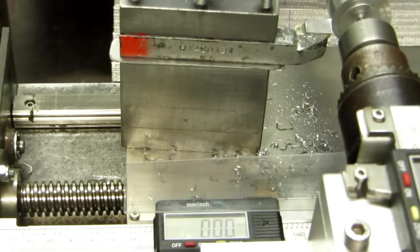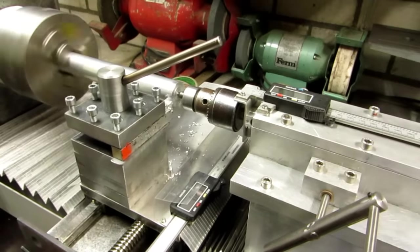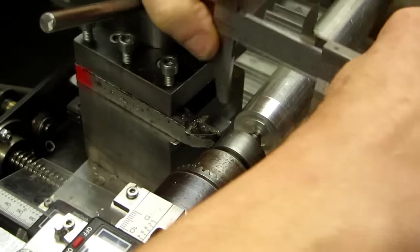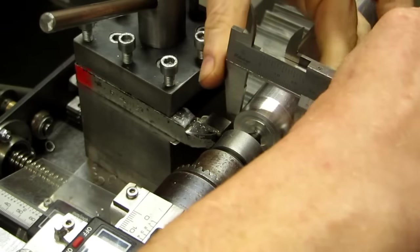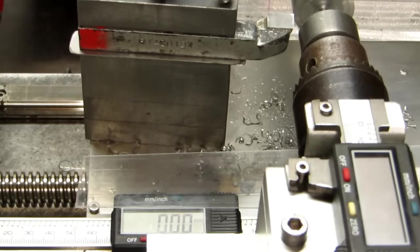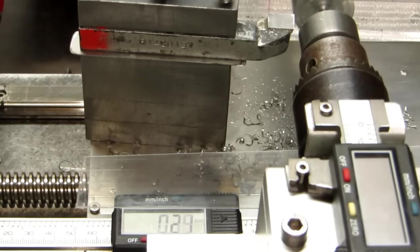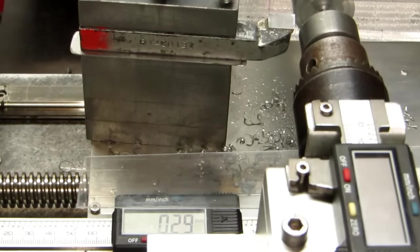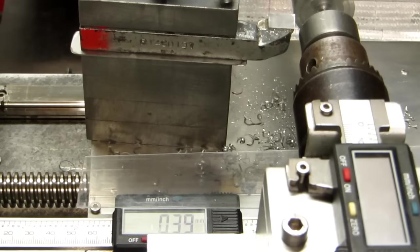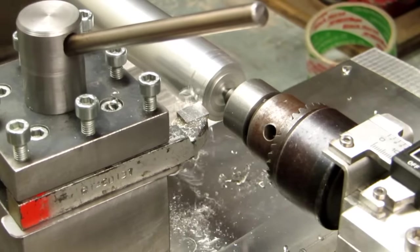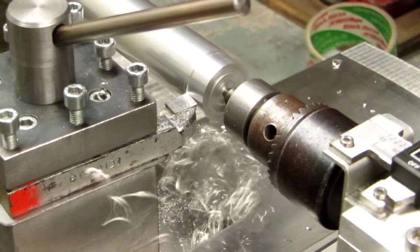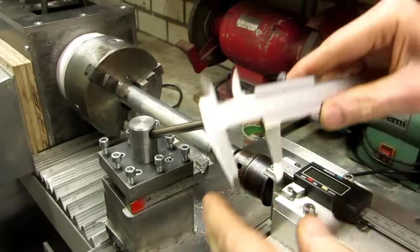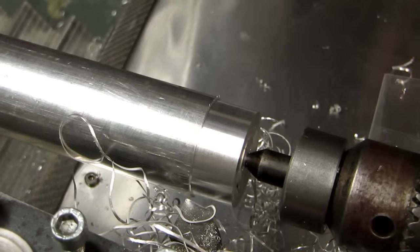First I zero the cross-slide caliper and make a rough cut. Then I measure the rough cut diameter. To get a defined end cut diameter I set the new cross-slide cut depth to 50% of the difference between the rough cut and the end cut diameter. The resulting end diameter is now exactly the target value. The surface finish is also quite nice.